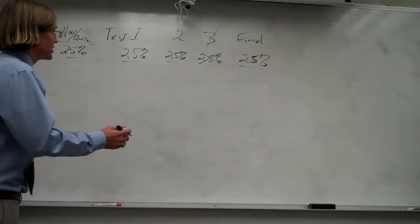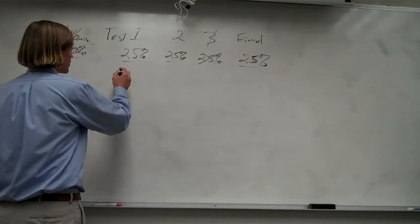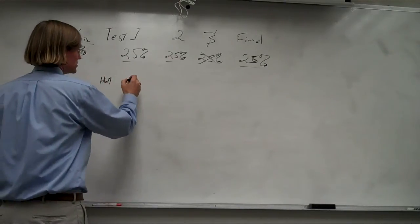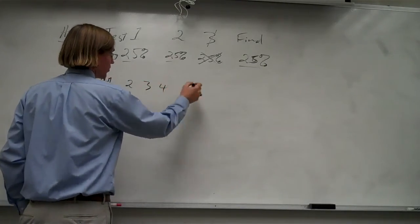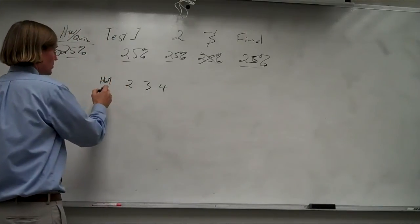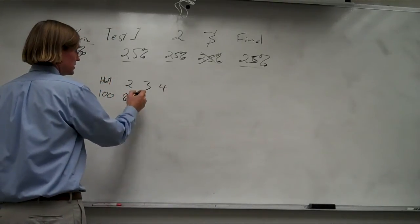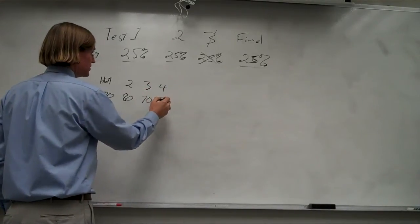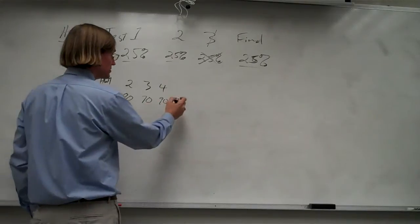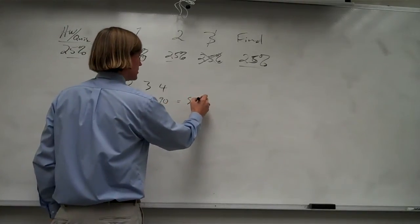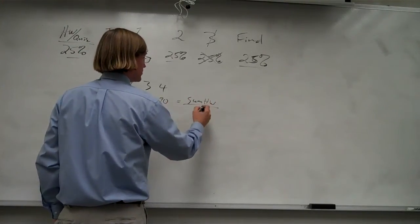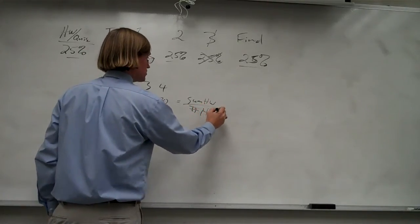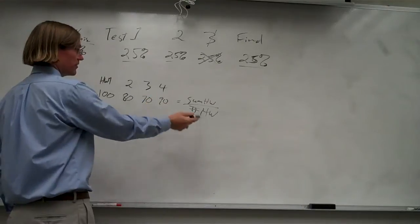To calculate the homework quiz grade, you add up all your homeworks. So if you've got homework one, two, three, four, and let's say the grades are 100, 80, 70, 90, you add up all these grades. Take the sum of the homeworks and divide it by the number of homeworks. So add those up, divide by four.